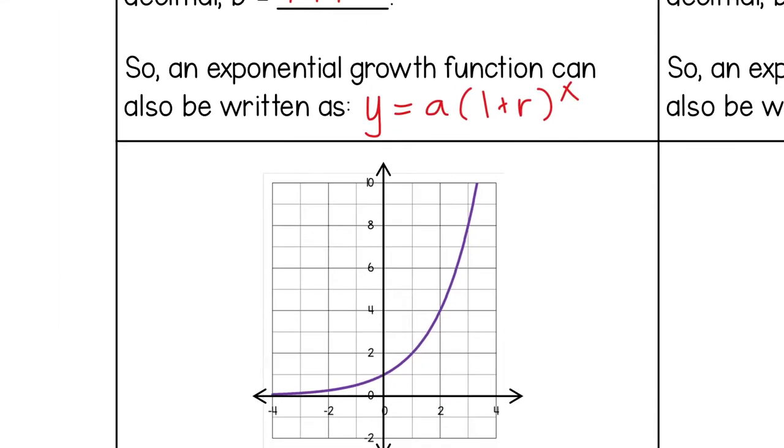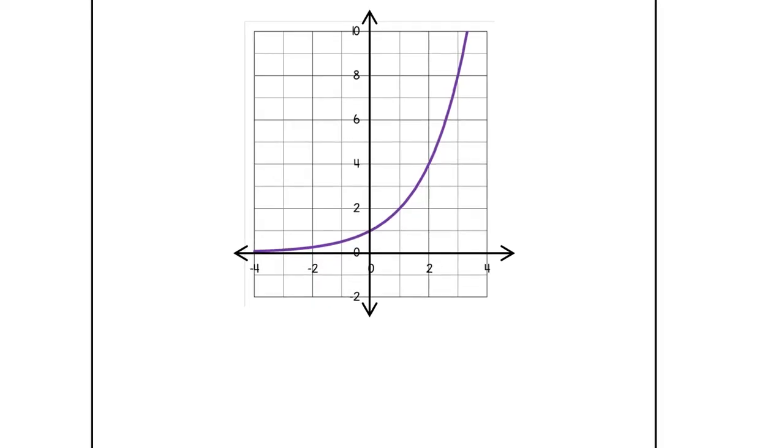Right below this is an example of what you would see when you look at a graph. This is exponential growth. And I know that it's growth because when I read the graph from left to right, so always left to right, so going this direction, that curve is going up. It's kind of cut off a little bit, but there is an arrow there. It's going up forever and ever and ever. So that makes this exponential growth.